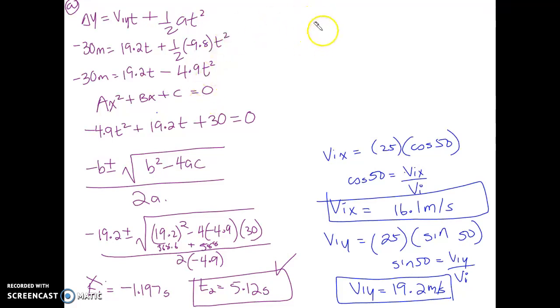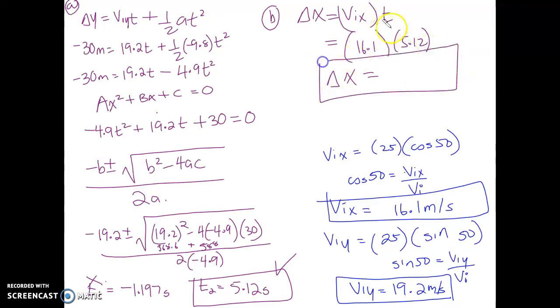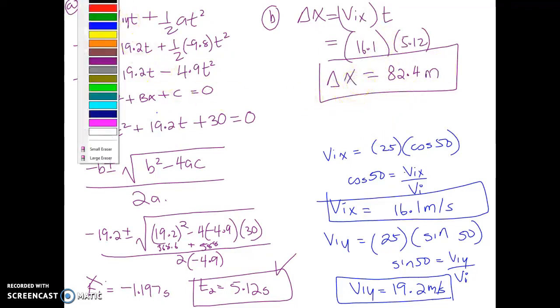Now that we've found our time, the next thing that we're going to do, part b of the question, is find my range. Delta x equals vix times t. You see the process no matter how you do it or what you do, it's exactly the same, it's repeating over and over again. So 16.1 meters per second times 5.12 seconds. What is your range? 82.4 meters, second part of the question.